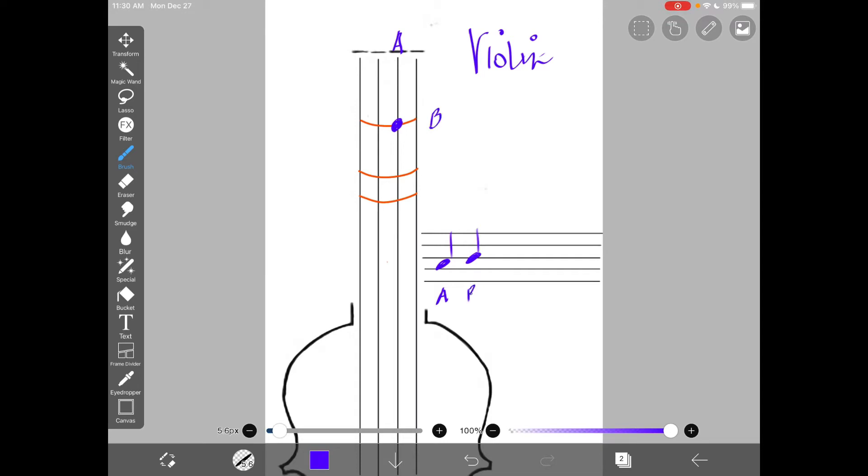So we know after A and B, there is C sharp. This is a C sharp, and that's played on your second tape with your second finger on your A string.